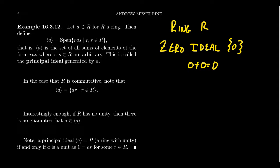We also have to be closed under ideal multiplication: if we take any element of the ring and multiply it by any element of the ideal, it must stay in the ideal. But that's easy — from properties of rings, any element times zero equals zero, even in a non-commutative ring, because zero is the additive identity and the distributive laws give it this absorption property. So the zero ideal is always an ideal for any ring whatsoever.